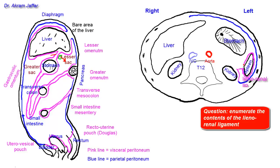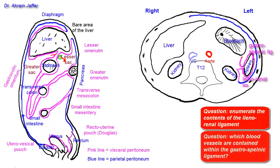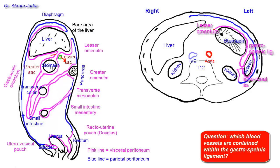The peritoneum returns back to the hilum of the spleen where the lienorenal ligament is attached — this is the hilum where vessels pass in and out. It is then reflected into the greater curvature of the stomach as a double fold — one layer to the greater curvature of the stomach — this is called the gastrosplenic ligament. Note that most of these folds and ligaments contain blood vessels. From the greater curvature the visceral peritoneum covers the anterior surface of the stomach and reaches the lesser curvature.